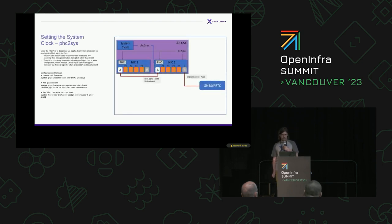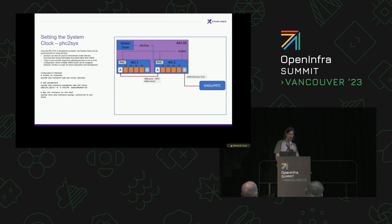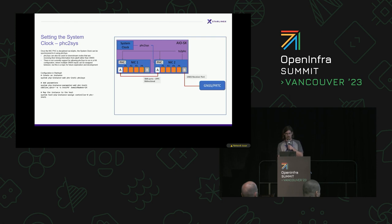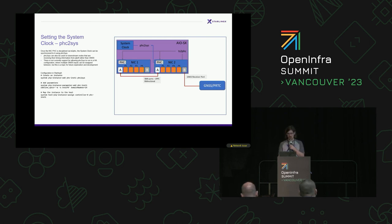Once we've got the GNSS signal coming in and the NICs frequency locked, the next step is to set the system clock, which is what most applications running on the system are going to actually care about. We're going to use PHC2SYS, which is very simple — you just provide which of the PHCs you want to pull the time from, and PHC2SYS disciplines the system clock to keep it locked to that. So now we've got a system clock completely locked in with the PHC, which is completely locked in with the GNSS signal, and we can move on to actually deploying PTP4L.